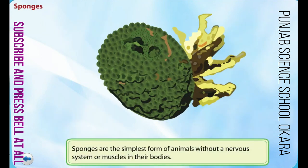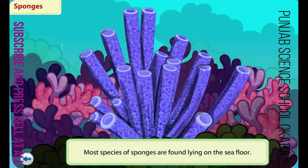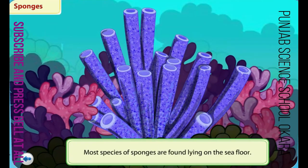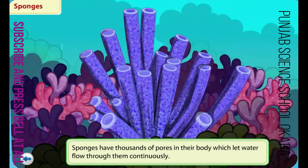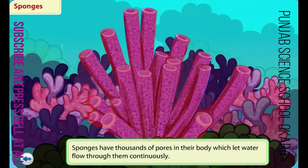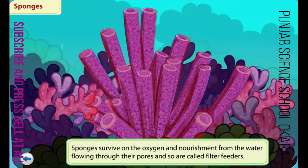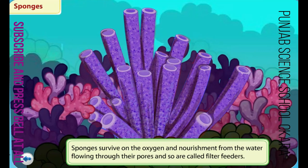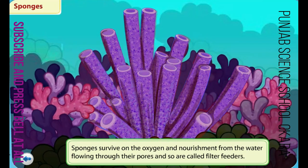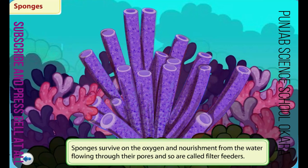Sponges are the simplest form of animals. Their bodies don't have a nervous system or muscles, so sponges can't move on their own. Most species of sponges are found lying on the seafloor. Sponges have thousands of pores in their body which let water flow through them continuously. Sponges are filter feeders — they survive on the oxygen and nourishment from water flowing through their pores.